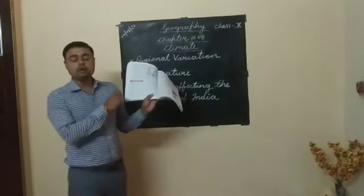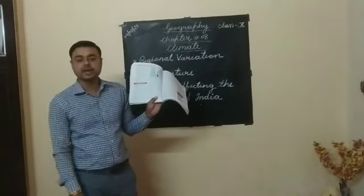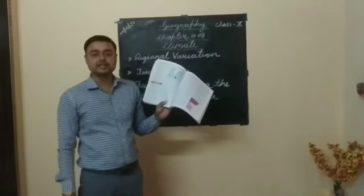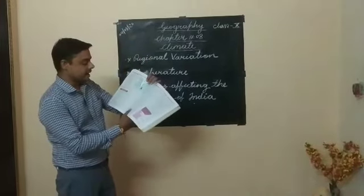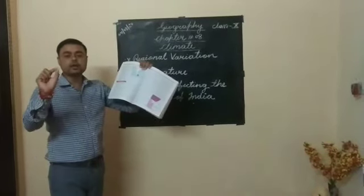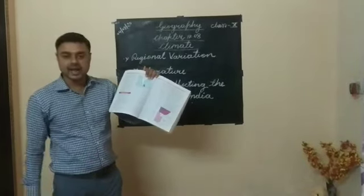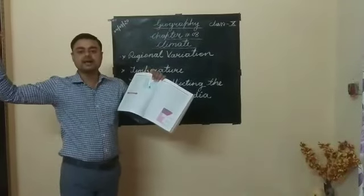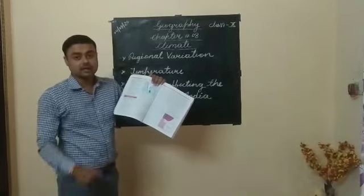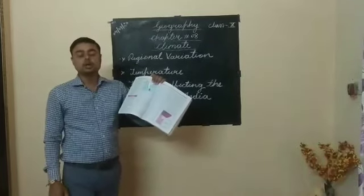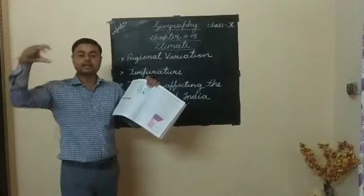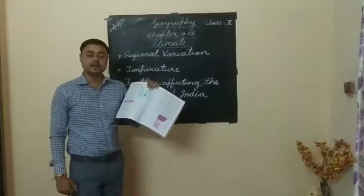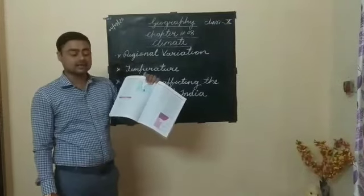Next, the monsoon winds help bring rainfall in our country India. Due to the monsoon winds, our country receives maximum rainfall. The next point is latitude — latitude is an imaginary line that you read in Class 9. In this chapter, the Tropic of Cancer line passes through the middle of our country India and this area receives vertical sun rays.